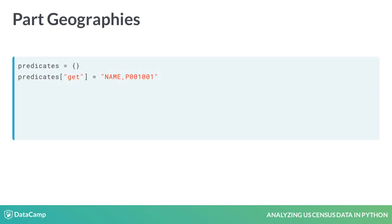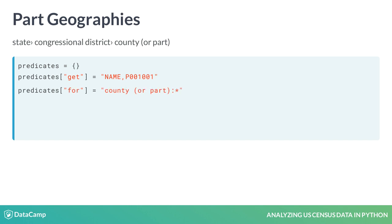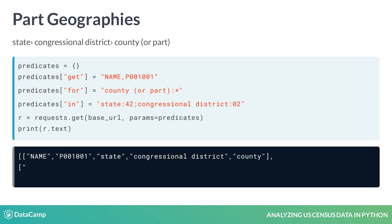What about requesting data for geographies that don't nest cleanly? For example, the State-Congressional-District-County hierarchy. The FOR predicate must be set to county (or part), not just county. You must specify GeoIDs for each level up the hierarchy: state colon 42 semicolon congressional district colon 02. This requests counties in the 2nd congressional district in the state of Pennsylvania. The result shows the two counties in the 2nd district, but the names indicate that they are part counties. Demographic data is reported only for the parts of these counties that fall in the 2nd district.